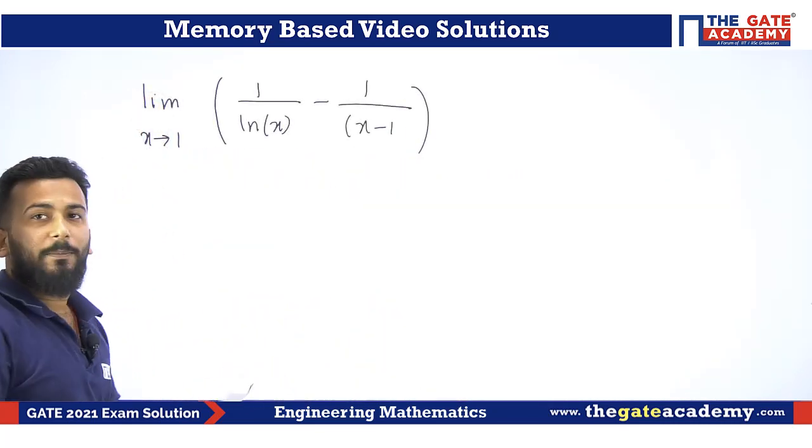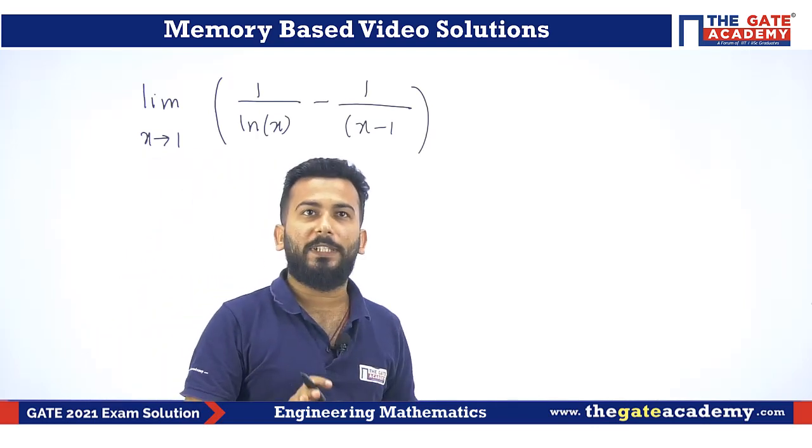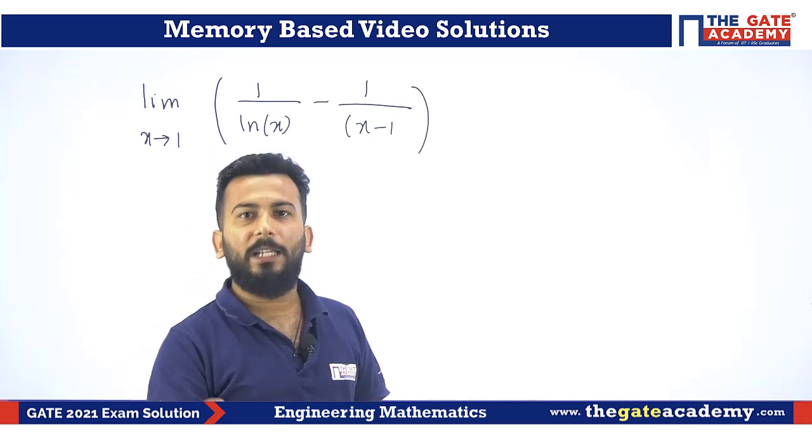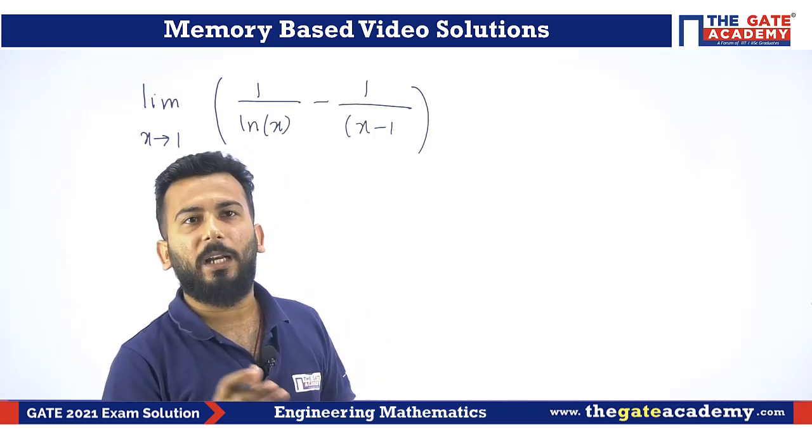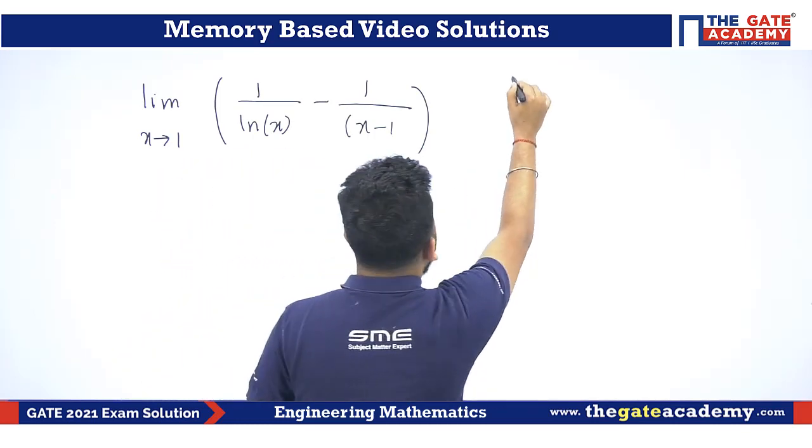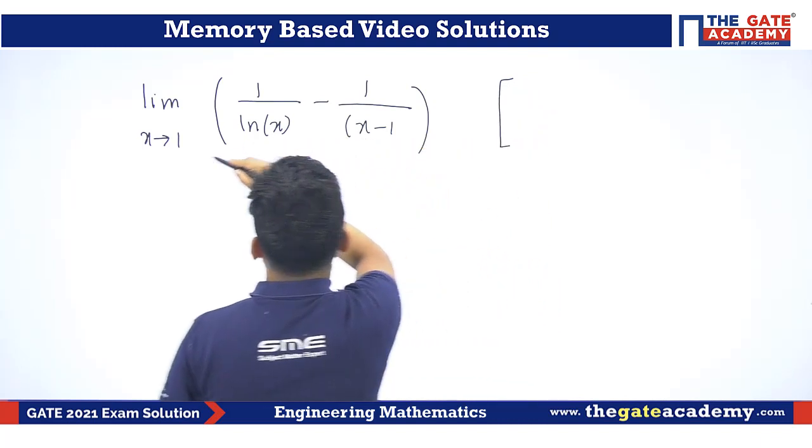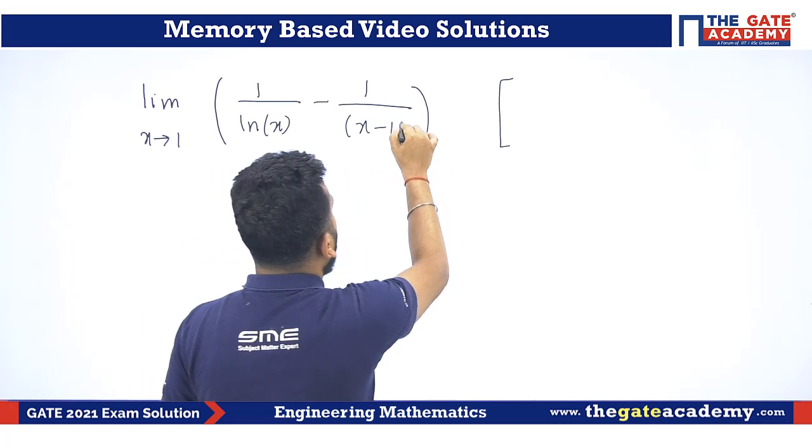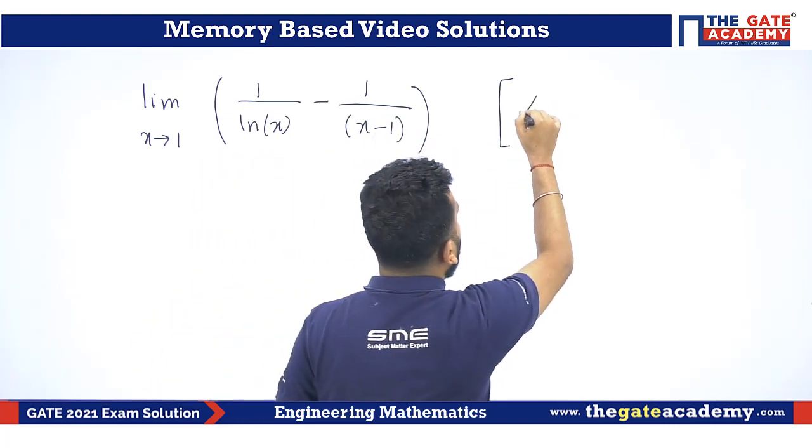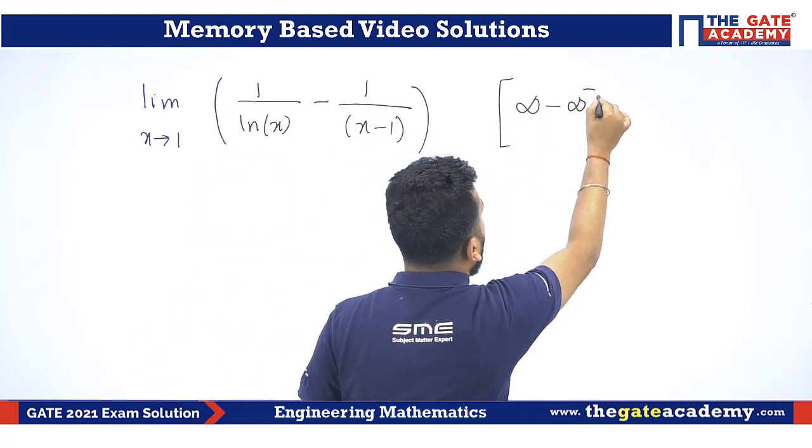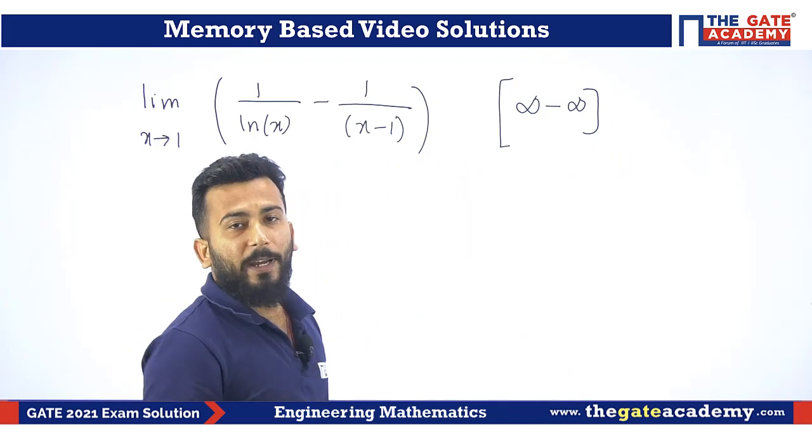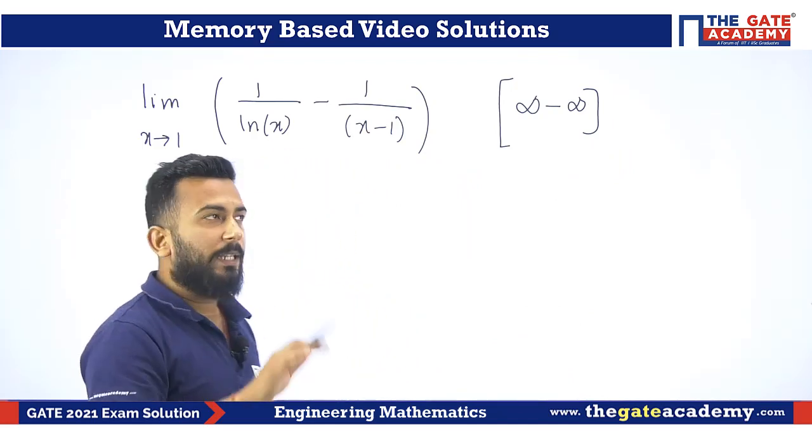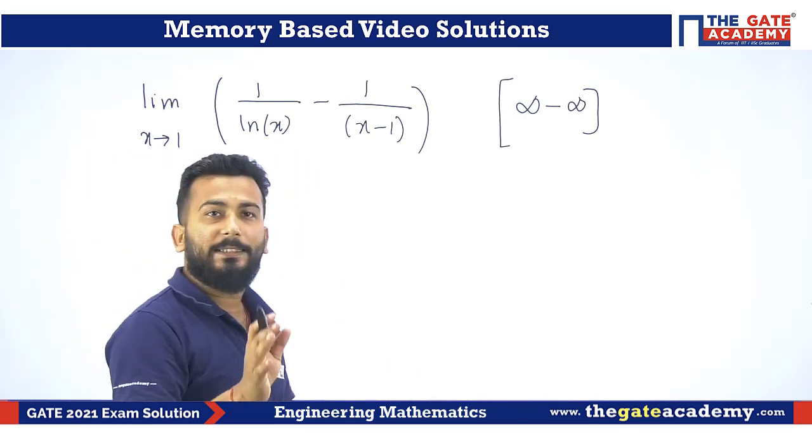Now, this was a limit question that came in the forenoon session. What do you think about the question? Everyone knows that in any limit question, the first thing is we determine its form. If you see the form is, if you put 1, 1 by ln of 1, 0 minus 1 by 1 minus 1, 0, it is clearly infinite minus infinite form. In infinite minus infinite form, we convert it to 0 by 0 or infinite by infinite form by taking the LCM.